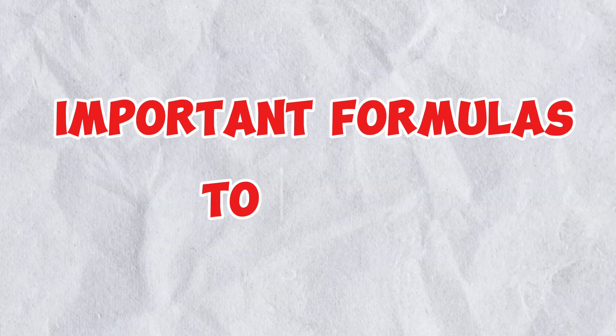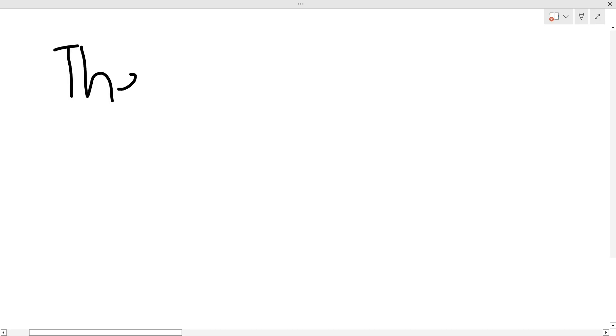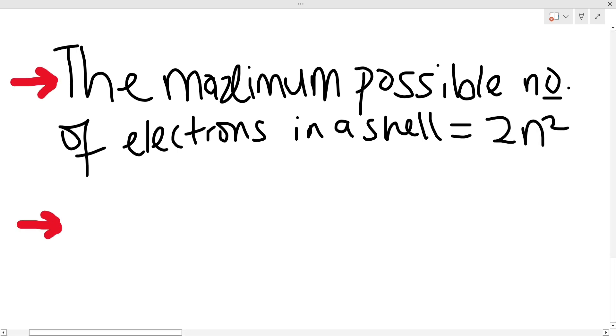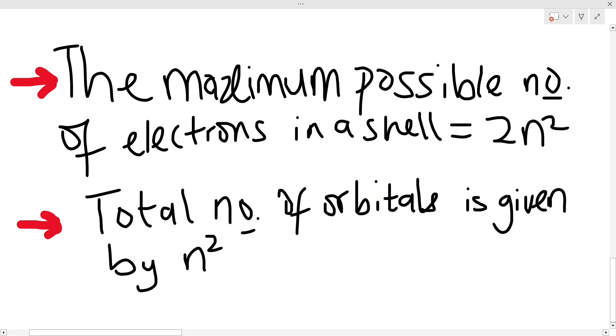Important formulas to note: one, maximum possible number of electrons in a shell is given by 2n². Two, the total number of orbitals is given by n². Now let's take some questions on this.